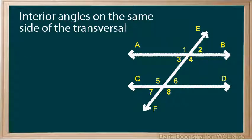Angles 4 and 6 are on the same side of the transversal and are examples of interior angles on the same side of the transversal.